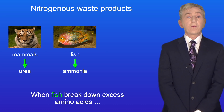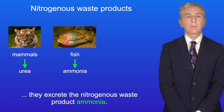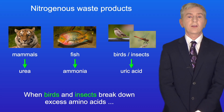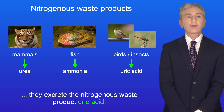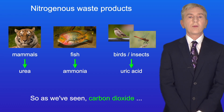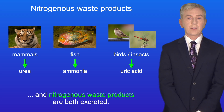When fish break down excess amino acids they excrete the nitrogenous waste product ammonia. And when birds and insects break down excess amino acids they excrete the nitrogenous waste product uric acid. So carbon dioxide and nitrogenous waste products are both excreted.